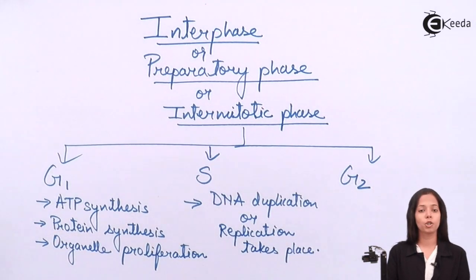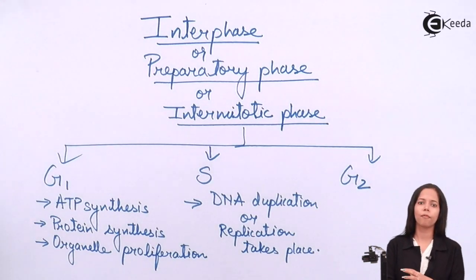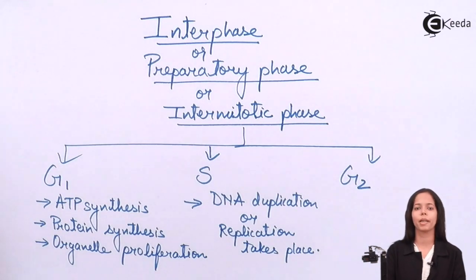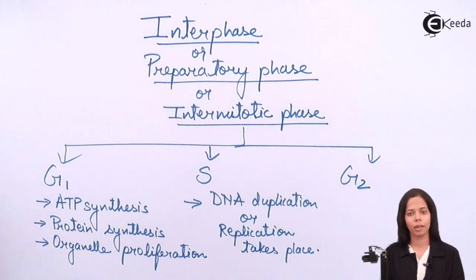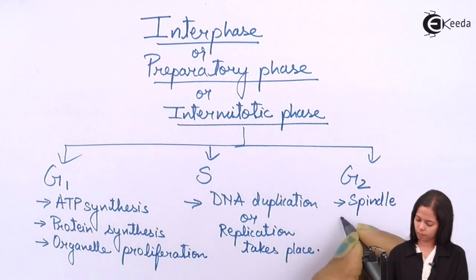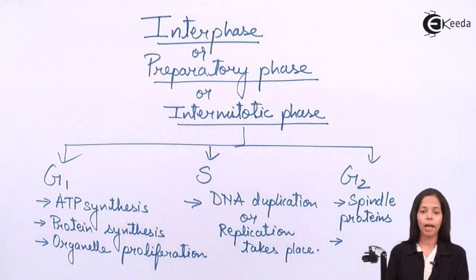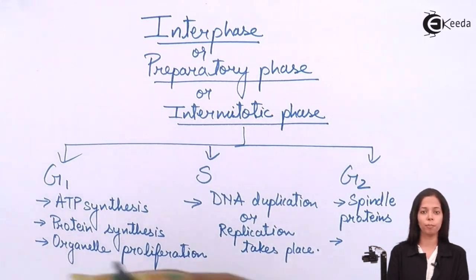G2 phase is a phase for remaining tasks. If something is left to be synthesized or carried out from G1 phase, it is covered up in G2 phase. Remaining proteins are synthesized here, especially the spindle proteins. RNA is also synthesized, which helps in protein synthesis for later purposes.